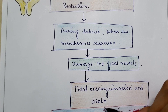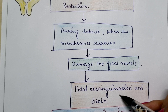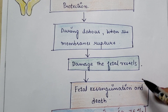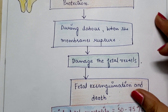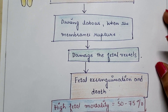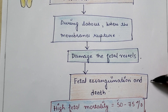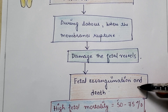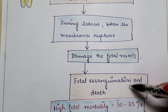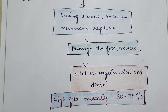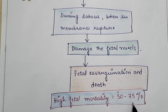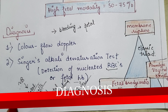This bleeding leads to fetal exsanguination — meaning severe blood loss — which can even cause fetal death. There is fetal exsanguination because in vasa previa the blood loss is fetal. Normally in placenta previa or abruptio placenta the blood loss is maternal, but in vasa previa the blood loss is fetal. That is why there is fetal exsanguination and death, with 50 to 70 percent chances of fetal mortality.